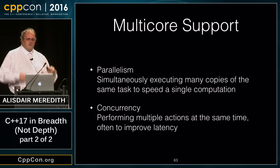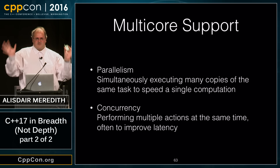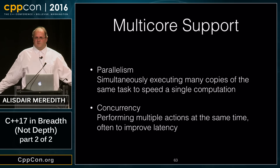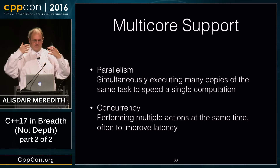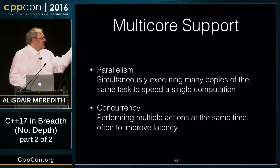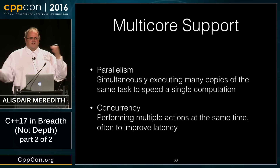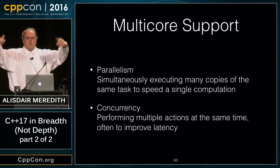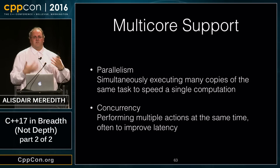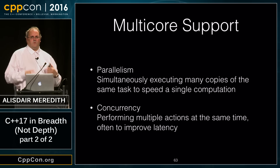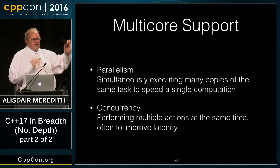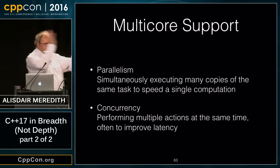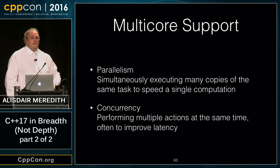Parallelism is using multiple execution units to perform the same computation as quickly as possible — farming out tiny parts and collecting results. Concurrency is multiple threads doing different things at the same time to reduce latency; it's very useful for asynchronous processing but has different idioms and goals than parallelism.